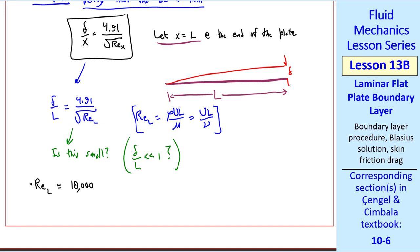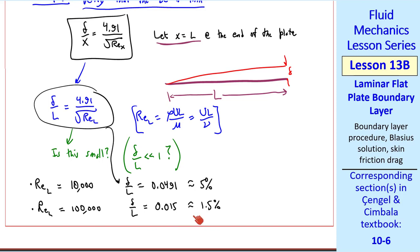If REL is 10,000, delta over L becomes 0.0491, or approximately 5%. That's not real small, but it's small enough that these boundary layer calculations are reasonable. If REL is 10 times bigger, delta over L is 0.015, or about 1.5%. So the boundary layer approximation is, again, better as Reynolds number gets bigger. As a quick preview of coming attractions, REL can't get too big, or the flow will start transitioning to turbulence. And then this laminar flow solution is no longer valid. This typically occurs above this Reynolds number. So the calculations are good for this Reynolds number.